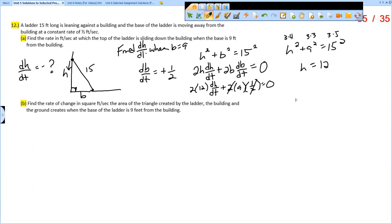The 2 and the one-half... I'm going to subtract the 9 term, so I have 2 times 12, that's 24, times dH/dt equals negative 9. So dH/dt equals negative 9/24ths of a foot per second.